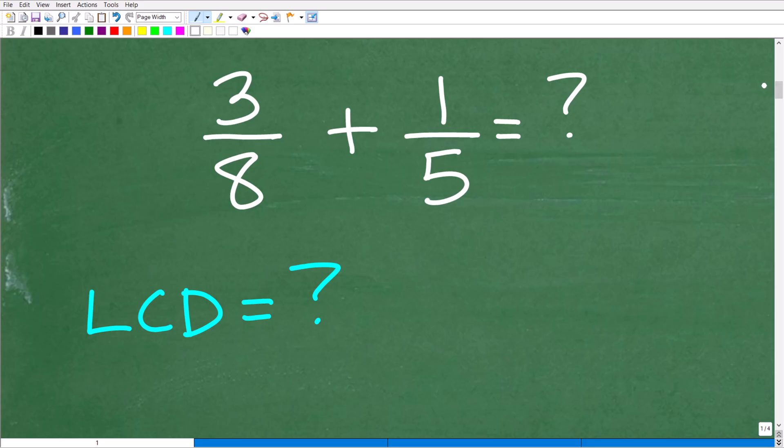When you're adding and subtracting fractions, you can only add or subtract fractions if the denominators are the same, or they are common. The bottom numbers are the denominators of a fraction, and the top numbers are the numerators. The denominators must be the same. In this case we have 8 and 5, so clearly these denominators are not the same, so we have to find a common denominator. There's a bunch of different common denominators for 8 and 5, but we want to use the lowest common denominator.